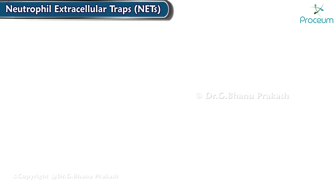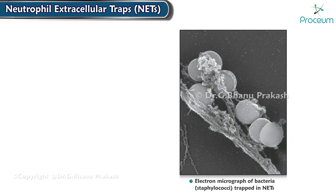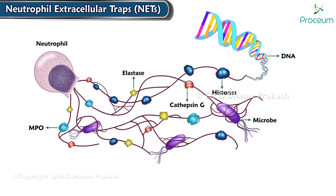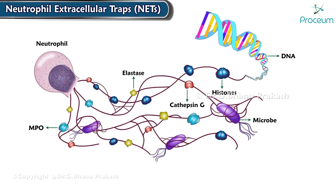Next, we'll talk about neutrophil extracellular traps, or NETs. NETs provide an additional mechanism of killing microbes that does not involve phagocytosis. They have also been detected in the bloodstream during sepsis. NETs are composed of nuclear components, such as DNA and histones,